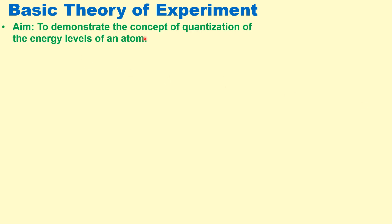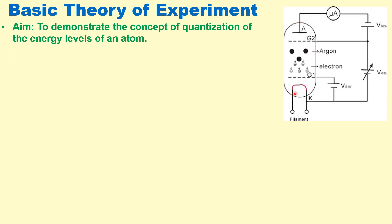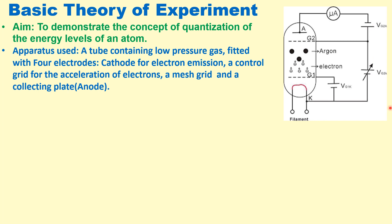The aim of this experiment is to demonstrate the concept of quantization of the energy level of an atom. This is the experimental setup in which there is a tube with a low pressure gas — here it is argon — and there are four electrodes in this tube. It is a tetrode, so there is a cathode, grid G1, grid G2, and anode.